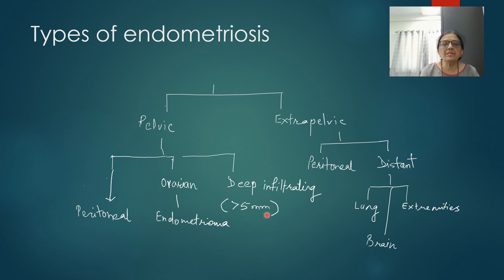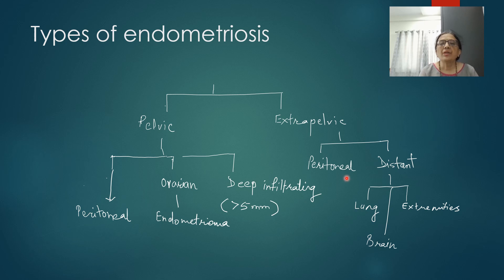Though it is a benign disease, it locally infiltrates and can also metastasize to various parts of the body — that is one of the additional peculiarities of this disease. Extrapelvic endometriosis can be in the peritoneal cavity or at distant sites such as the lung, brain, or even extremities. All parts of the body except the spleen are said to have a possibility of being affected by endometriosis.